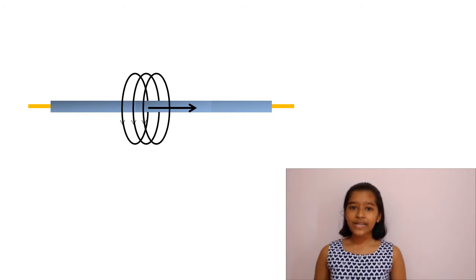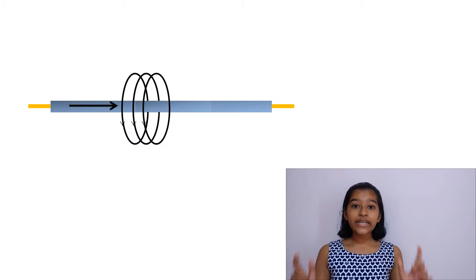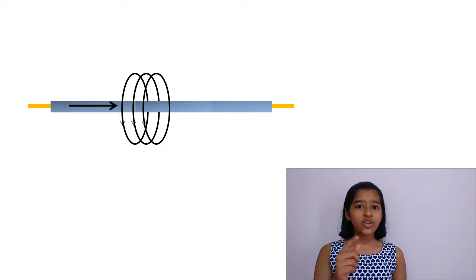You can also make a magnet using electricity. When a current is flowing through the wire, a magnetic field is formed around the wire. There are two ways to increase the strength of your magnet.